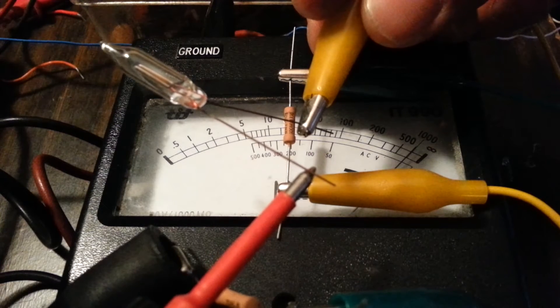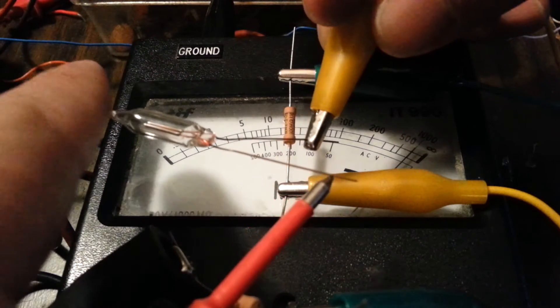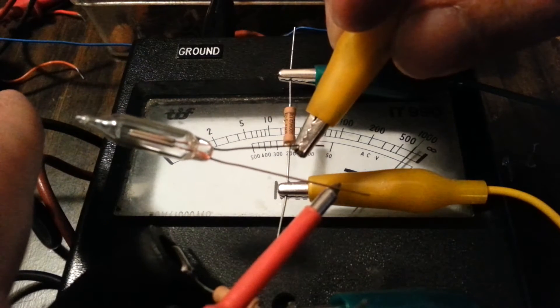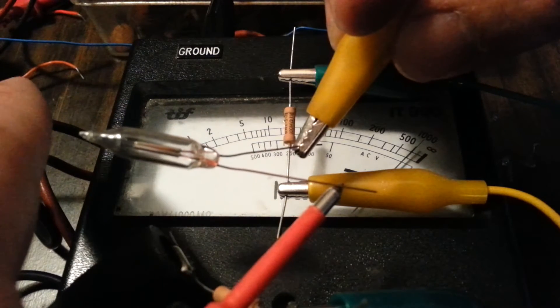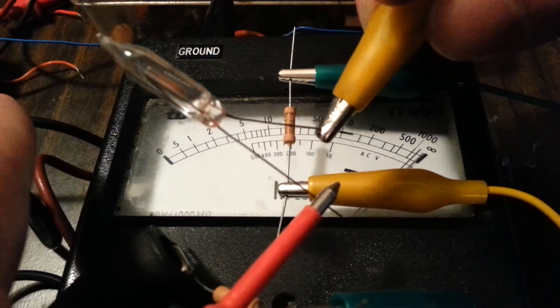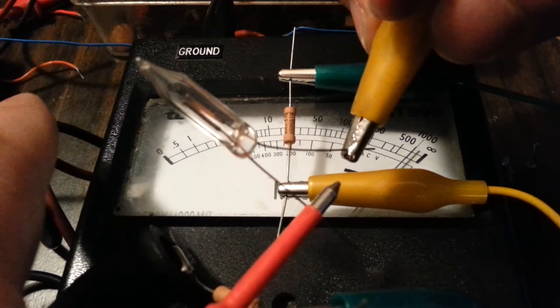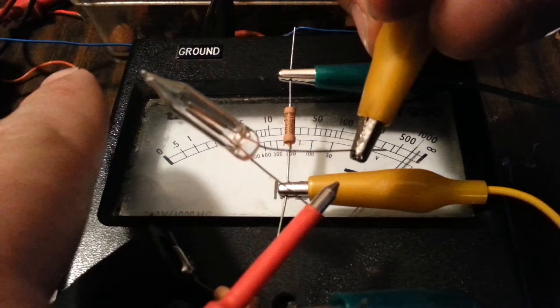So we should be able to see it and read a gigaohm. You can see the meter go to a thousand, a thousand meg. You can perhaps barely see the neon light come on. But it's very very dim. Because the current flow through that thing is extremely low. That is just incredible.